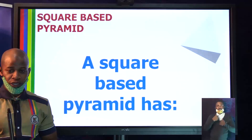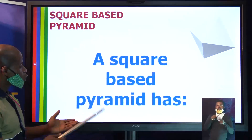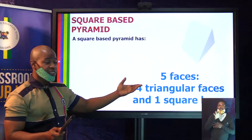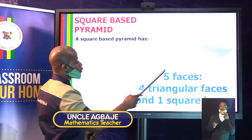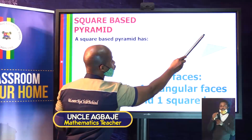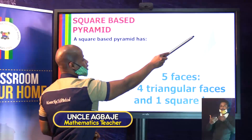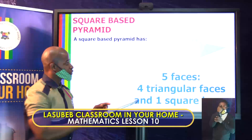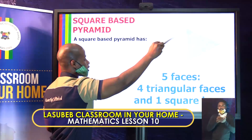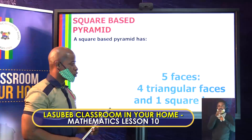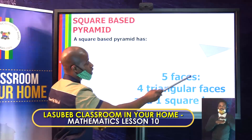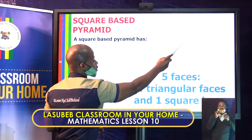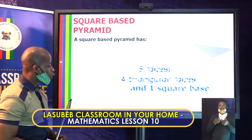I believe you have now made your notes. A square-based pyramid has five faces. From the front view: one, two, three, four — and the base at the back is the fifth face. Don't forget that the faces are the flat parts. Four of these faces are triangular and the base is a square, which is the fifth face.